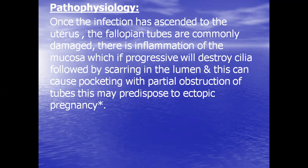Regarding pathophysiology: once the infection has ascended to the uterus, the fallopian tubes are commonly damaged. There is inflammation of the mucosa which, if progressive, will destroy the cilia. The cilia are very important for transport, followed by scarring in the lumen. This can cause pocketing with partial obstruction of the tube, predisposing to ectopic pregnancy — the implantation of the embryo outside the uterine cavity.